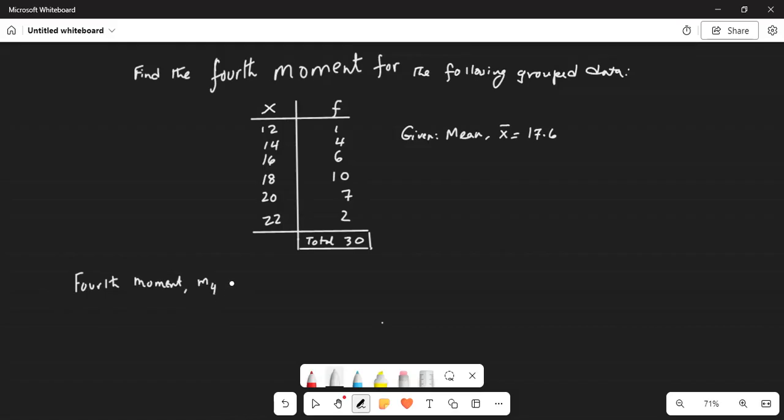M4 is equal to summation x minus x bar to the power of 4 times frequency for each number divided by n. Where f is frequency, x bar is mean, n is population size and this is sum.